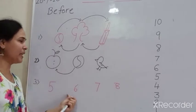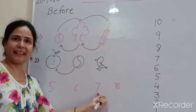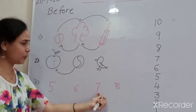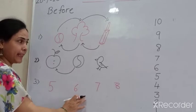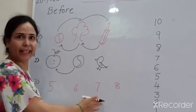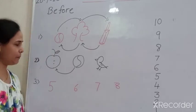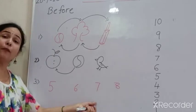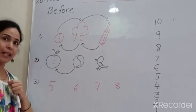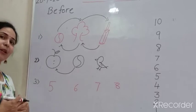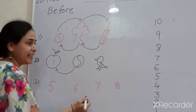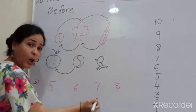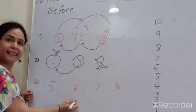Now, number line. If I ask you, here are numbers 5, 6, 7, 8. Now tell me, before 7 — which number is coming here, kids? Is it 8 or 6?